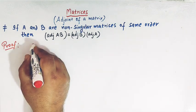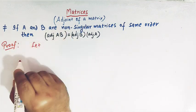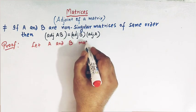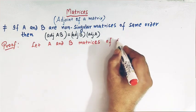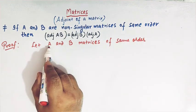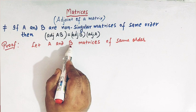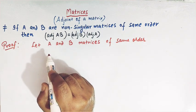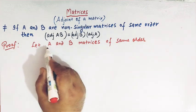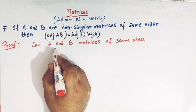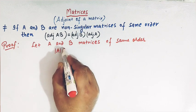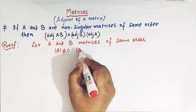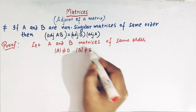Let us consider two matrices of the same order. Suppose A and B are two non-singular matrices of the same order. A matrix is said to be non-singular if its determinant is non-zero. So matrix A is non-singular if the determinant of A is not equal to zero, and similarly the determinant of matrix B is not equal to zero.